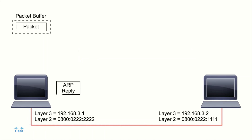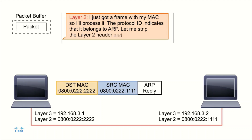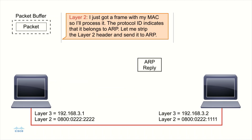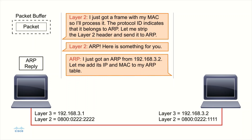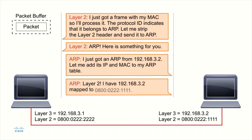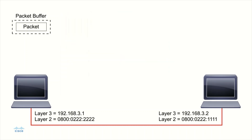On the other side, layer two receives that frame and says, this has my MAC address — I need to process it. The protocol ID tells me this is an ARP, so I strip off the layer two header and send it up to ARP. ARP says, this is an ARP reply from 192.168.3.2 — I can now add its IP and MAC address into my ARP table. That table can be viewed on Windows or Linux using the ARP -a command. ARP tells layer two: I now have the mapping — 192.168.3.2 maps to 0800.0222.1111. Now we can send the packet that's in the buffer.